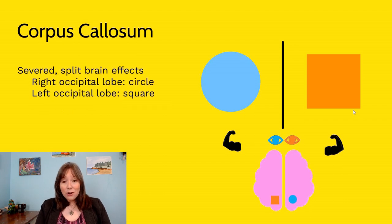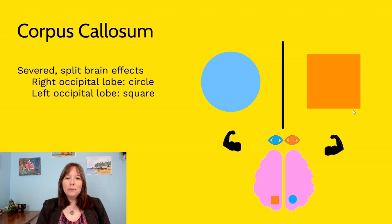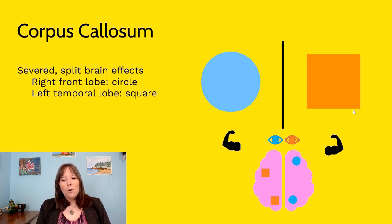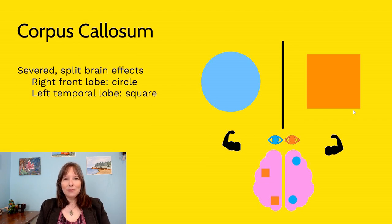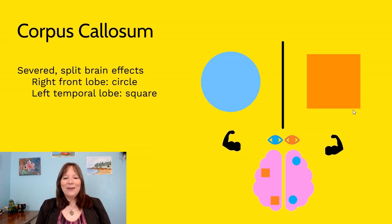With the divider, the right eye couldn't see the left field of vision and the left eye couldn't see the right field of vision. What they see with the right eye gets processed in their left occipital lobe, so the orange square would be seen on the left side of the occipital lobe, and the blue circle on the right side. But because of the split-brain effect, only the left hemisphere's content could be spoken — so if asked what they could see, a right-handed split-brain patient would only say 'the square.'